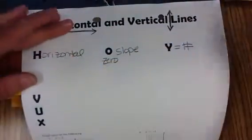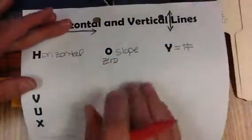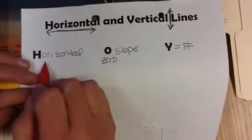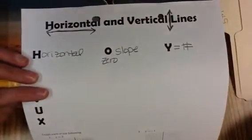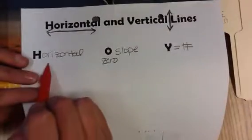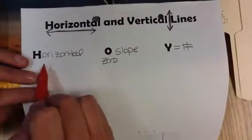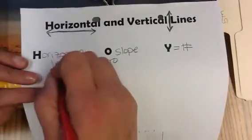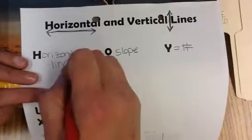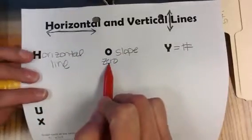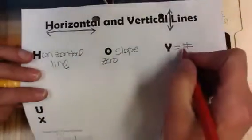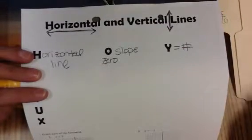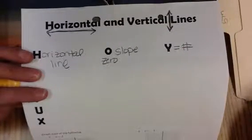There's a saying we use for horizontal and vertical lines. For horizontal lines we use H-O-Y. HOY stands for Horizontal, zero slope, and Y equals a number. So every horizontal line has a slope of zero and is in the form Y equals a number.